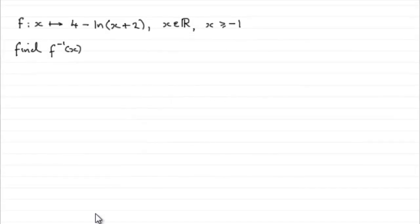Now, for this question, we're given that the function f is defined as x maps onto 4 minus the natural log of x plus 2, where x is any real number, although x is greater than or equal to minus 1. And we've got to find the inverse function of f of x.